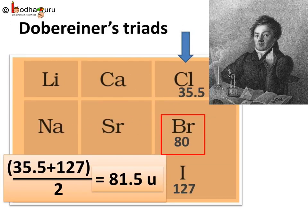The third triad consisted of chlorine, bromine, and iodine. Chlorine has an atomic mass of 35.5, bromine is 80, and iodine is 127. The mean of the atomic masses of chlorine and iodine is (35.5 + 127) ÷ 2 = 81.5. This is approximately equal to the atomic mass of the middle element, bromine, which is 80.